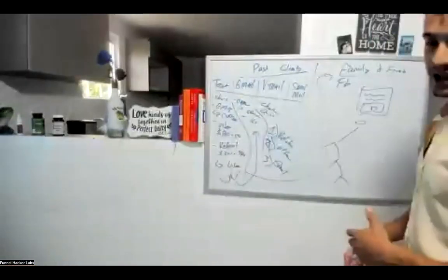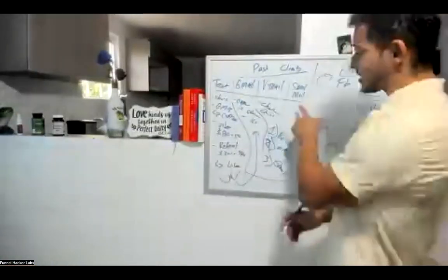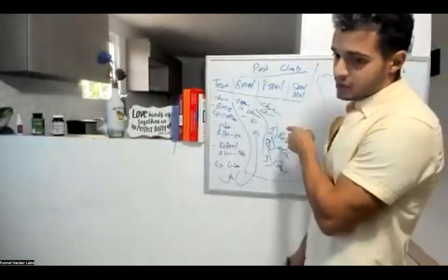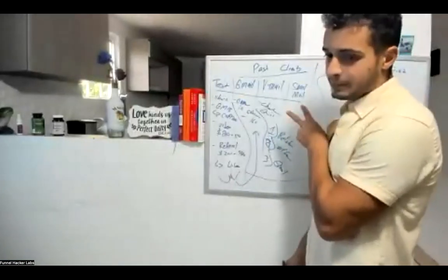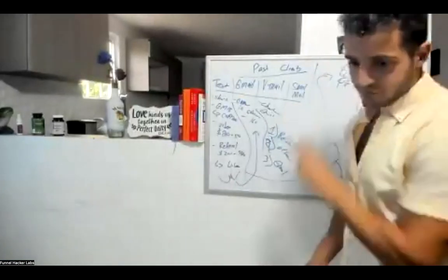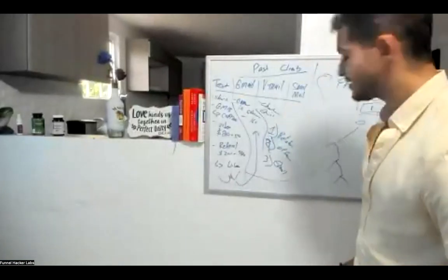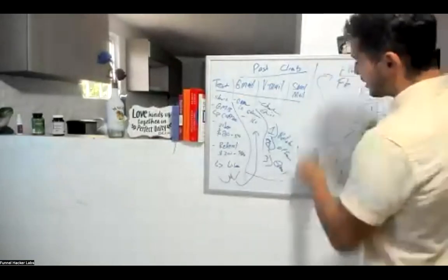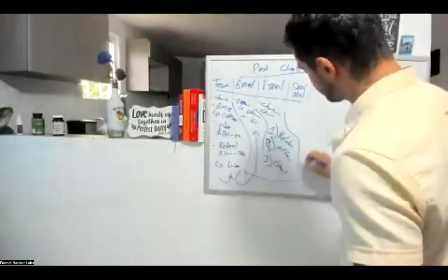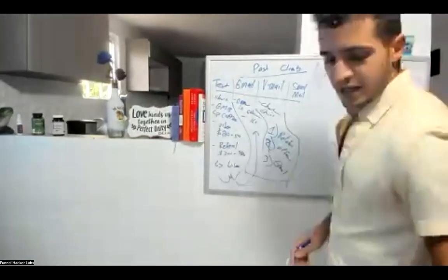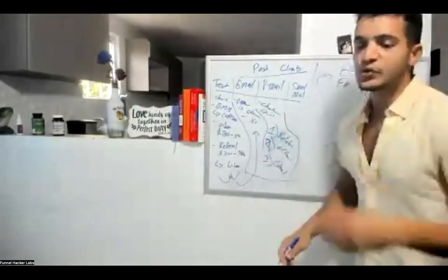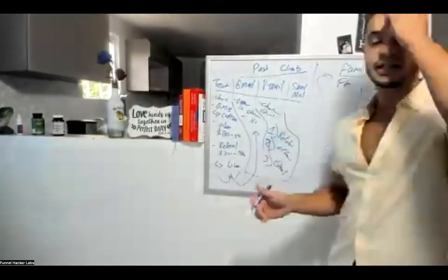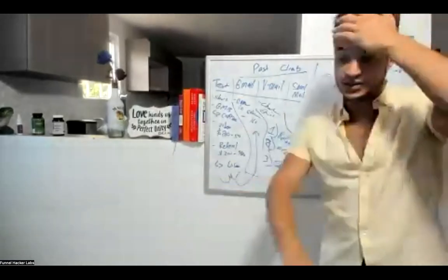The last outreach method is actually the most converting, but it costs the most and takes the most time: straight-up snail mail. If you've done people's roofs, you probably have their addresses. Make envelopes and send them to all past clients.